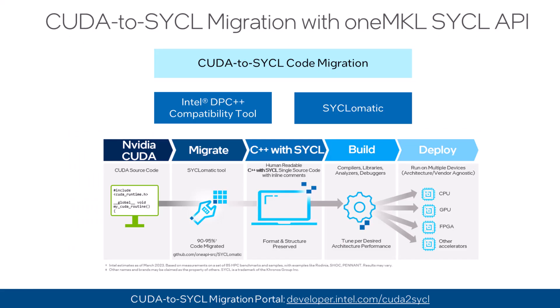Intel DPC++ Compatibility Tool and its open-source counterpart called SYCLomatic are the two automated migration tools available to easily migrate CUDA code to truly portable C++ with SYCL code. They replace CUDA math library calls with OneMKL's SYCL API functions in five simple steps as shown on the screen.